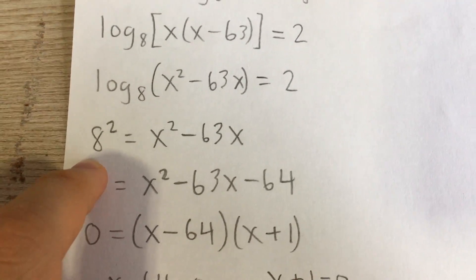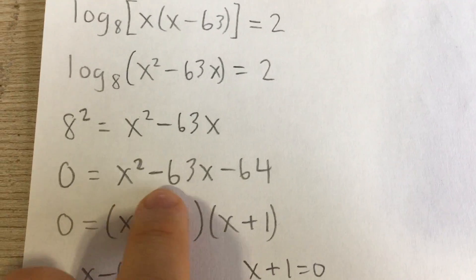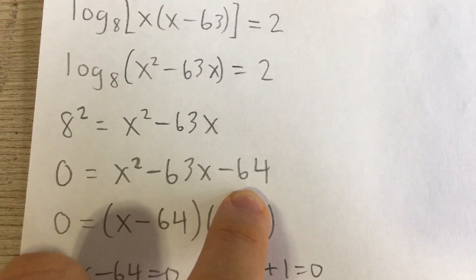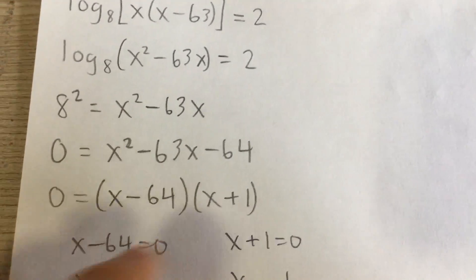This is 64. So I'm going to subtract 64 on both sides to set it equal to 0. So I have this quadratic, which I can factor into x minus 64 and x plus 1.